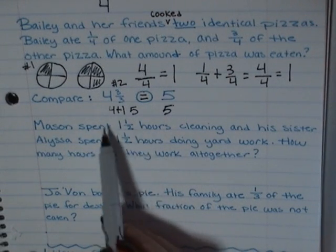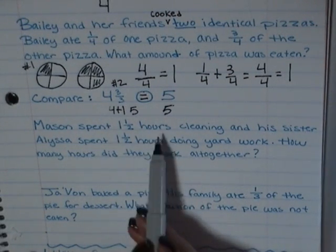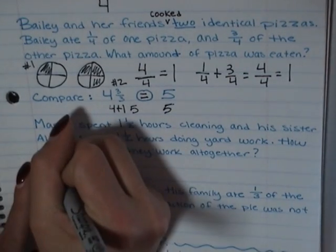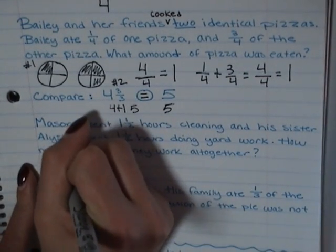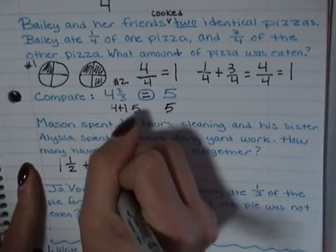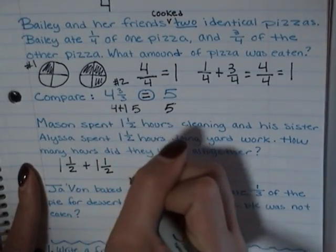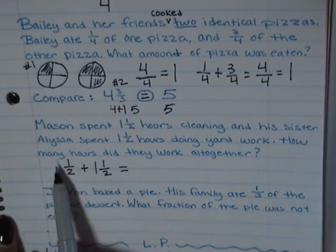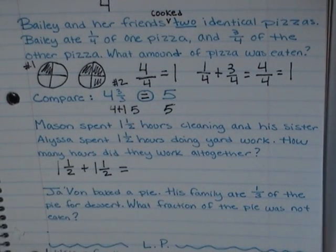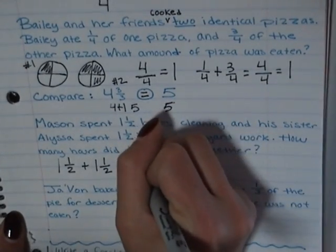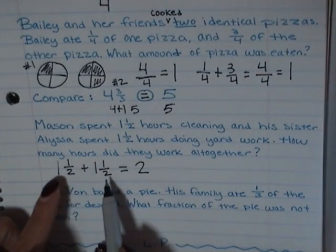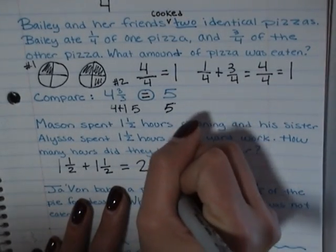So we're adding this one and a half hours to this other one and a half hours. So I'm going to write down my problem. One and one half plus one and one half. When I do this, I am going to add the whole numbers together first. So one plus one is a big two because it is my whole number.